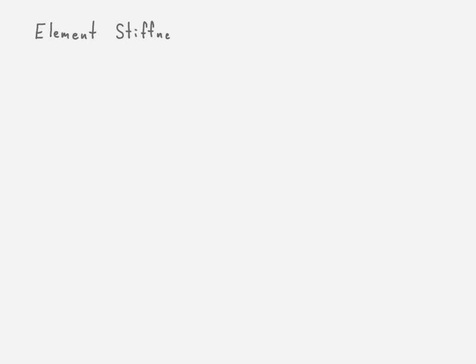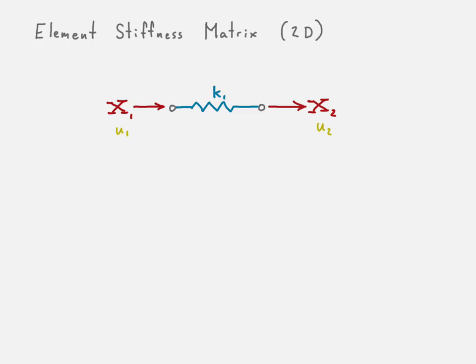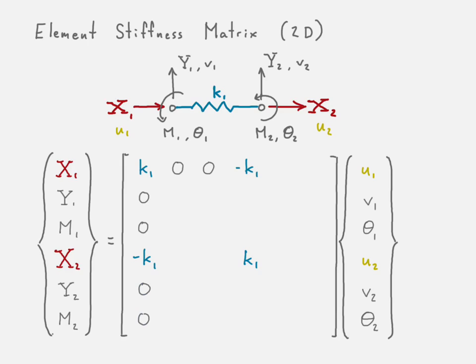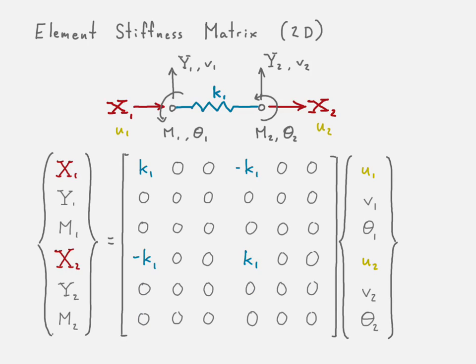Now if we go ahead and do that same elemental stiffness matrix in two dimensions, we still have our axial forces, our axial displacements, and our axial stiffness, but we're also going to have transverse displacements and transverse forces, and we're also going to have rotations and moments. So in two dimensions we have two additional degrees of freedom at each node, which means that our stiffness matrix for the element — which was two by two — is now going to be six by six, because we now have three degrees of freedom at each node. Note that it still resembles our original stiffness matrix in one dimension; the only difference is that now we plug in a lot of zeros for the transverse and rotational stiffness.